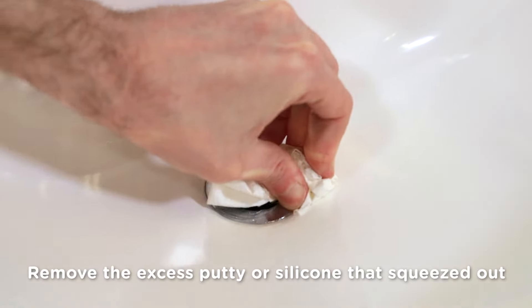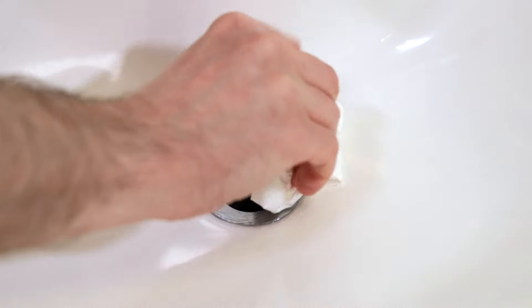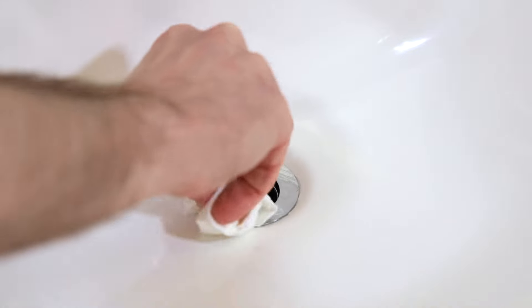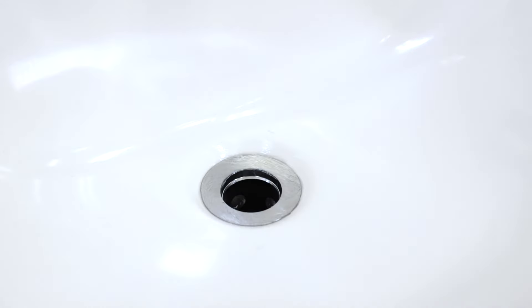When you're confident that's snug, remove the excess putty or silicone that's squeezed out. You'll need paper towels for the silicone, but you can just remove the putty with your fingers.